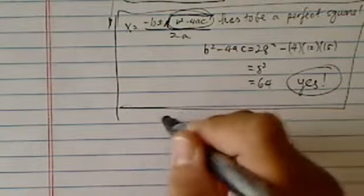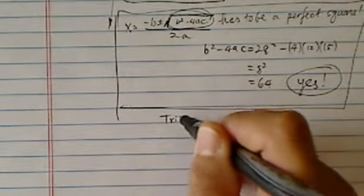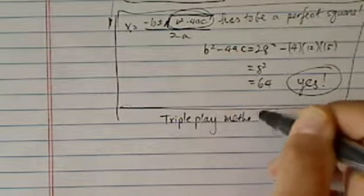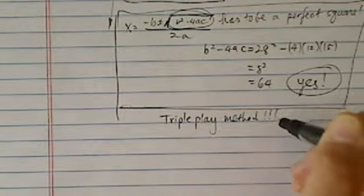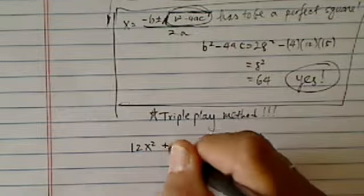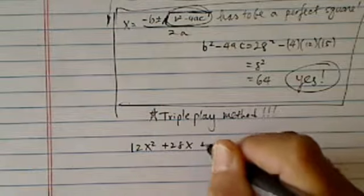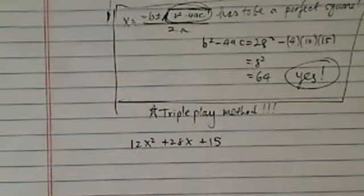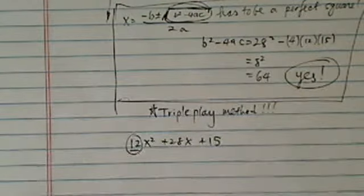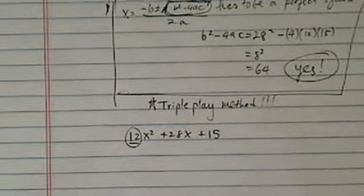Now once you've convinced or do this checkup first, make sure it is indeed factorable, then we'll discuss how to do it. If you log on to my channel, there is a method called a triple play method that I teach my students, and it does help you quite a bit if you're not familiar with it.